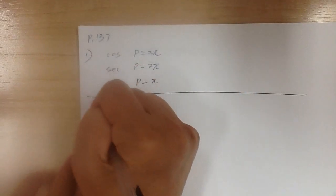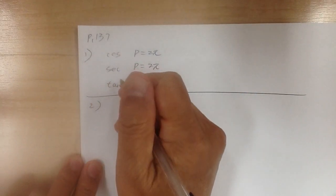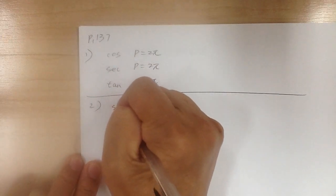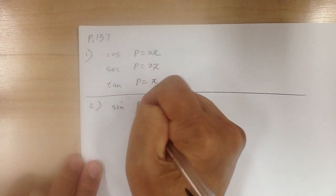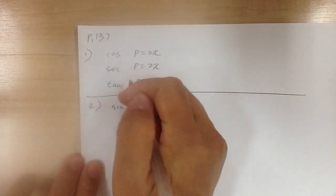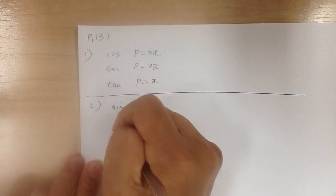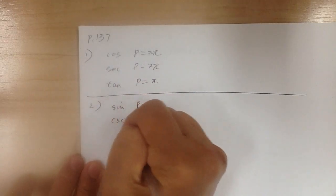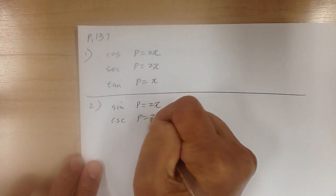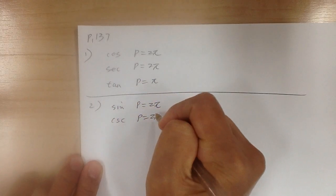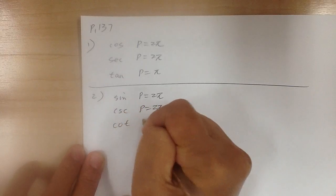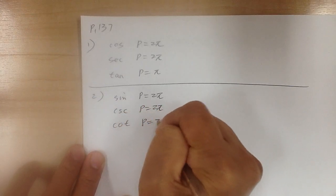For number 2, the period of sine is equal to 2pi. For cosecant, the period is equal to 2pi. And for cotangent, the period is equal to pi.